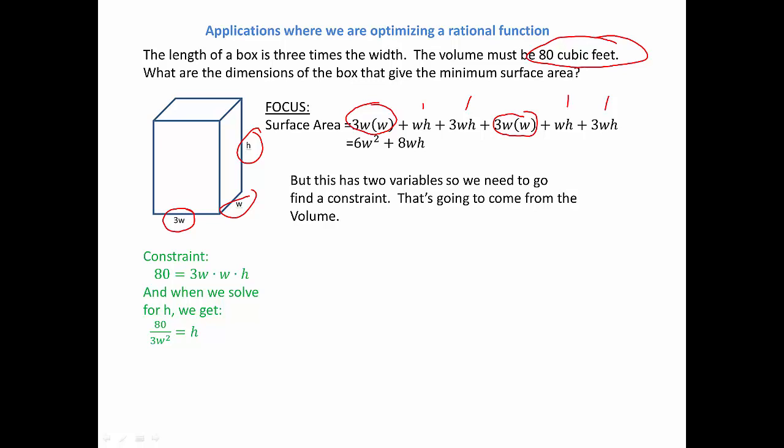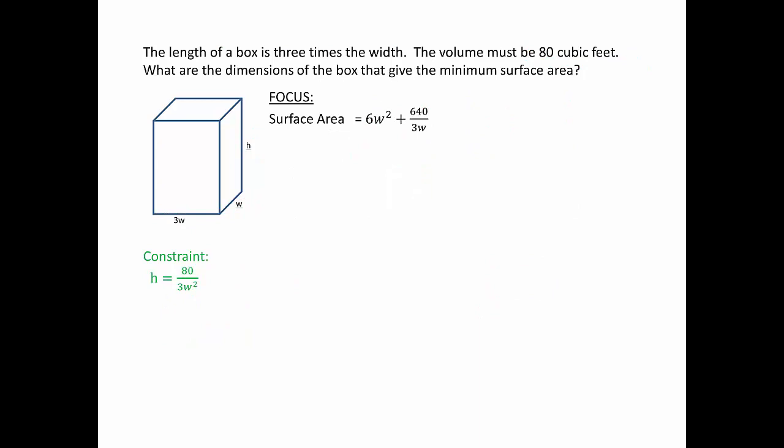And now we can just go ahead and plug it back into our surface area equation. And that simplifies to 6W squared plus 640 over 3W. The 640 came from the 8 times 80. And, of course, one of these W's canceled one of W's in the denominator. All right, let's make it prettier. So this is our focus. Notice we have one variable. We still have our constraint here just for reference, even though we're not using it right now.